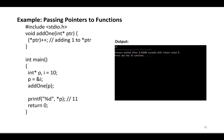Pointers with functions: a pointer as a function parameter is used to hold addresses of arguments passed during a function call. This is also known as call by reference. When a function is called by reference, any changes made to the reference variable will affect the original variable.